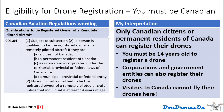Next, eligibility for drone registration. Bottom line: you must be Canadian. Rule number 90104 states that only Canadian citizens or permanent residents of Canada can register their drones, and you must be 14 years old to register. Corporations and government entities can also register their drones. Visitors to Canada cannot legally fly their drones here. I don't necessarily support all these rules, but these are the rules and I'm trying to help you understand what they say.